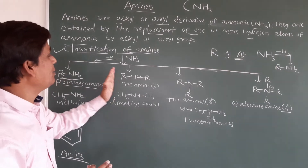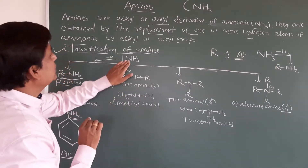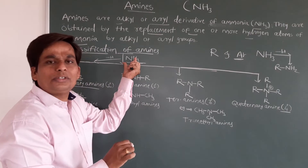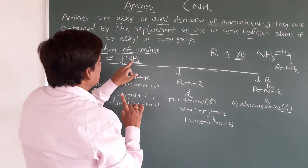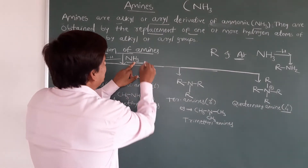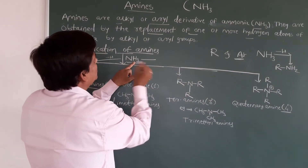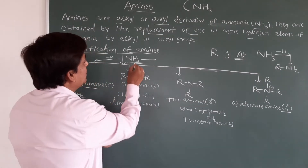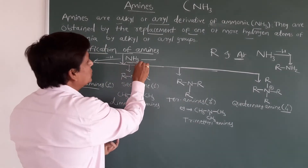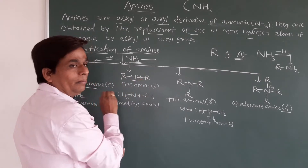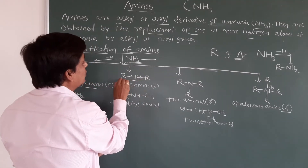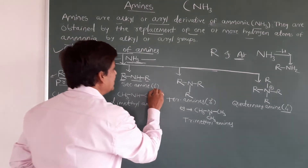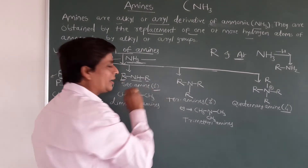Now see the secondary amine. In a secondary amine, from NH3, two hydrogens are replaced by two alkyl groups. In NH3 there are three hydrogens — if you remove two hydrogens, you get NH, and then attach two alkyl groups. These are secondary amines, also called 2° amines.